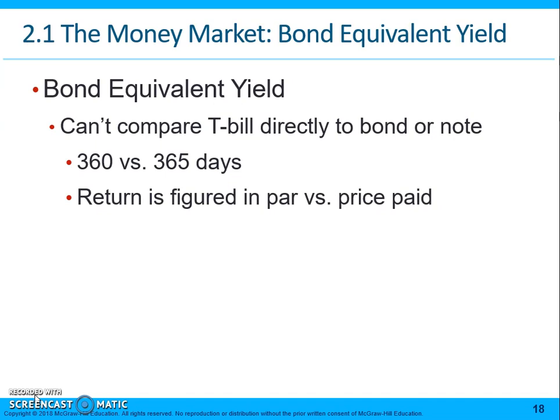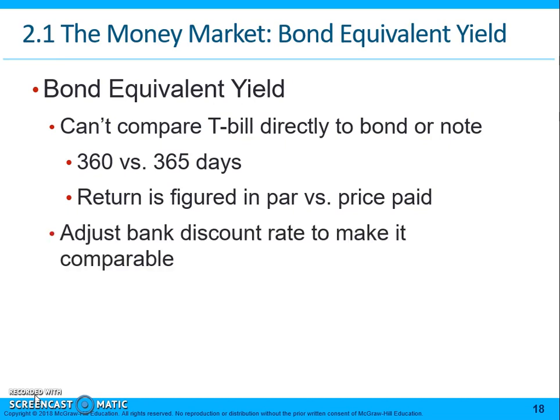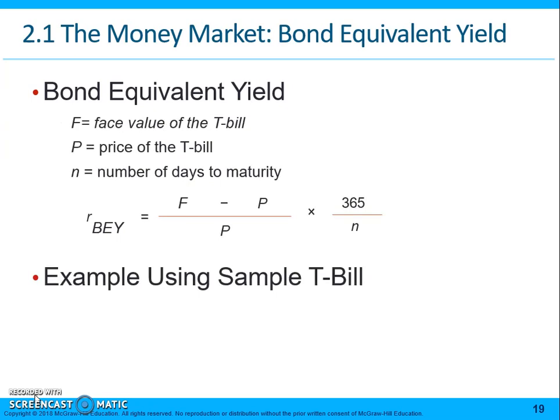Bonds are calculated on an actual/actual basis — 365 days versus 360 days for T-bills. The return is also figured differently: par versus price paid. So what we do is adjust the bank discount rate to make it comparable.